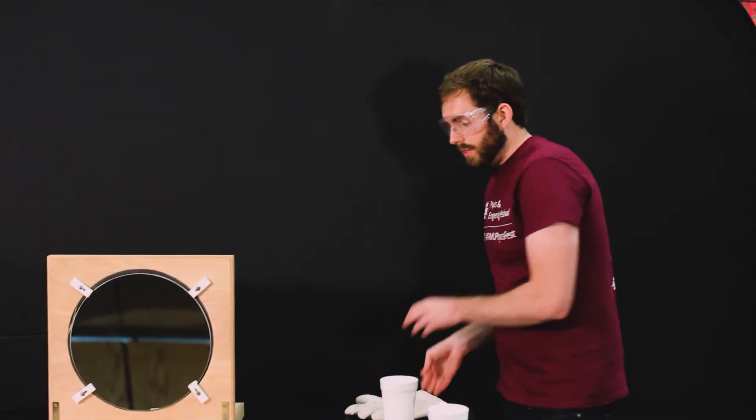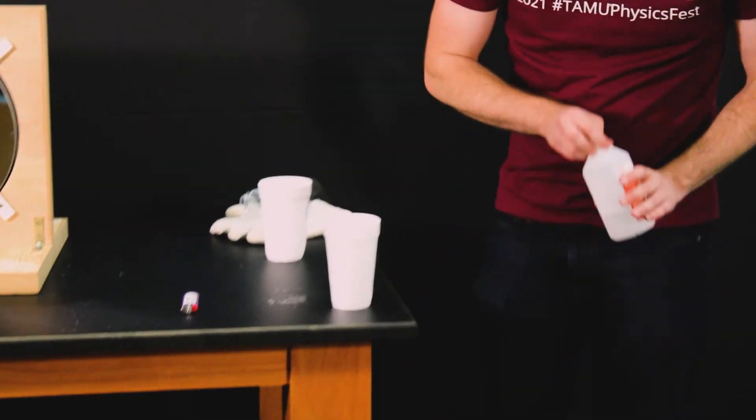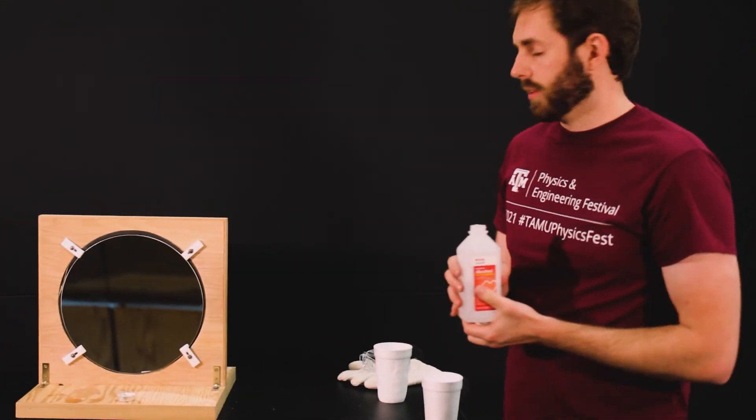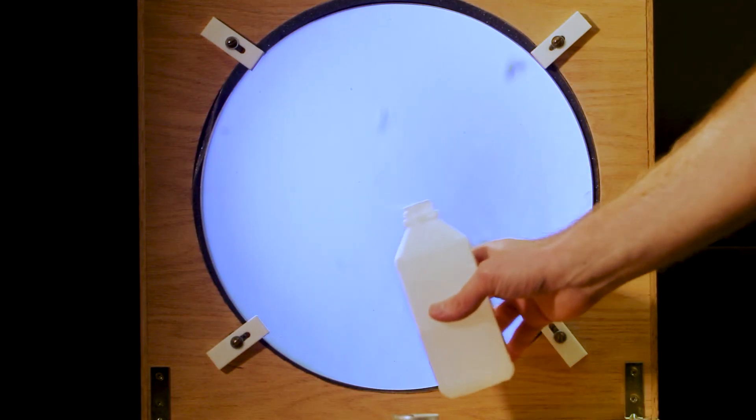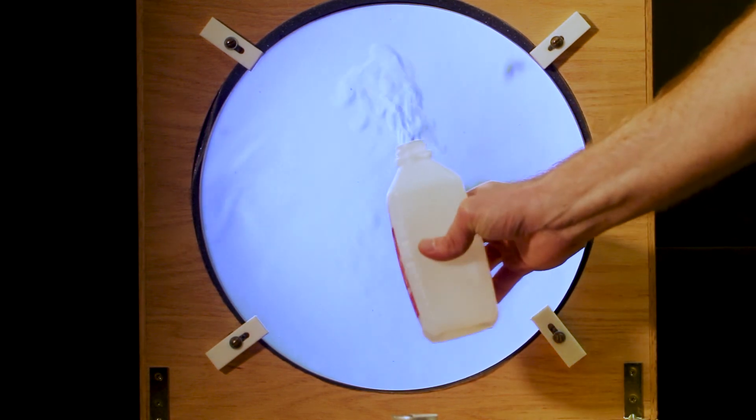But this setup doesn't just visualize temperature changes in air, because other things can change how the index of refraction of air works, or the density of air. For example, ordinary isopropyl alcohol. This stuff you might know has noxious fumes which you don't want to breathe in, but those fumes are also different in index of refraction. So I put it in front of here and poof it a couple times, you can actually see plumes of it coming out of the bottle.